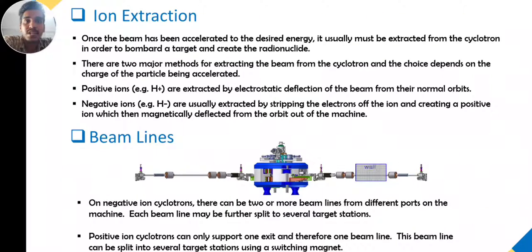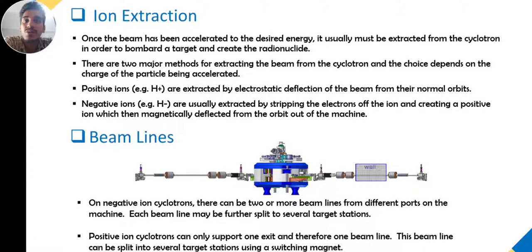For ion extraction: once the beam is accelerated to the desired energy, it must be extracted from the cyclotron to bombard a target or create a radionuclide. There are two major methods for extracting beam from a cyclotron depending on the charge of the particle being accelerated. Positive ions are extracted by electrostatic deflection of the beams from their normal orbits. Negative ions are usually extracted by stripping the electrons from the ions, creating a positive ion that is magnetically deflected out of the machine.